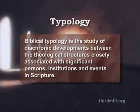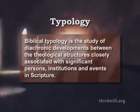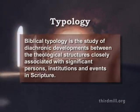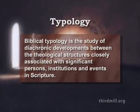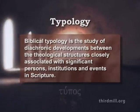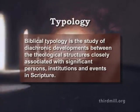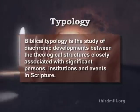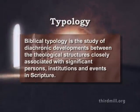We can summarize this special meaning in this way: biblical typology is the study of diachronic developments between the theological structures closely associated with significant persons, institutions, and events in Scripture. In simple language, we might say that typology is the study of types. The word type derives from the Greek word toupos, which is used 15 times in the New Testament. In three important passages, New Testament writers spoke of particular theological structures in the Old Testament as types of other theological structures in New Testament faith.